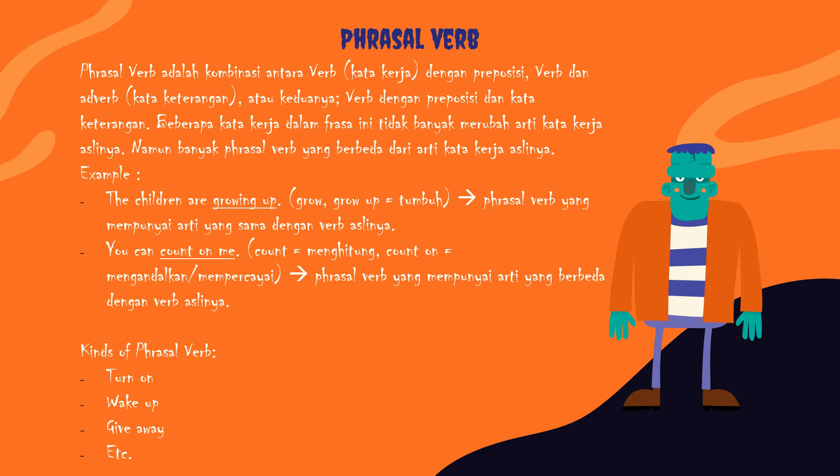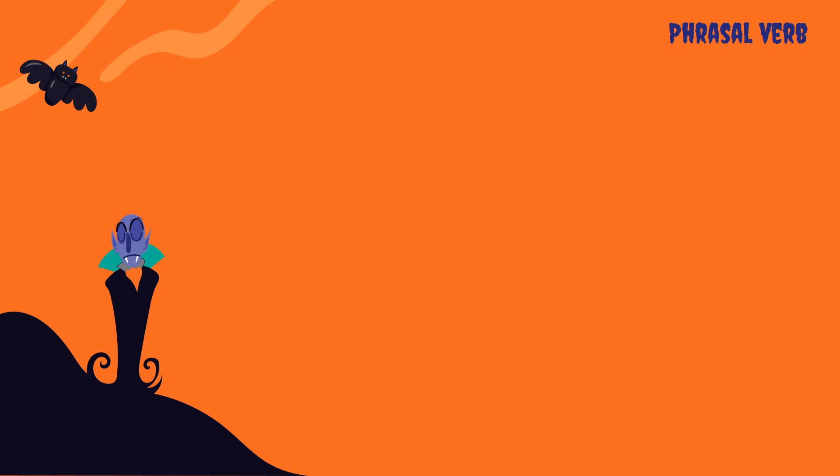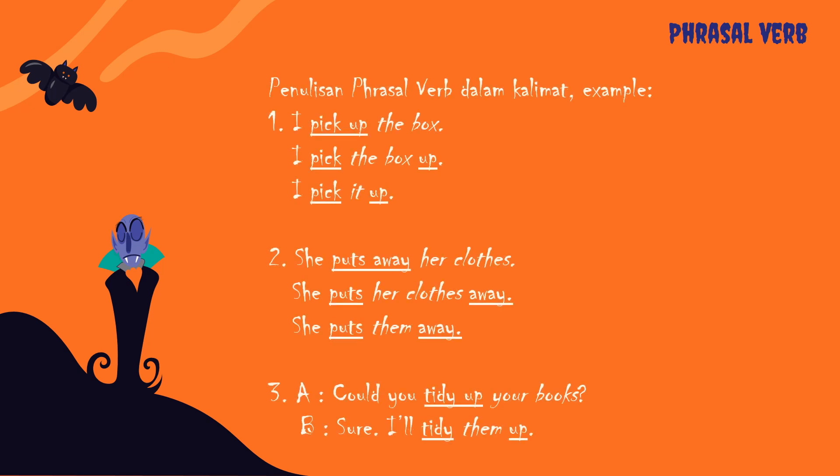Selanjutnya, jenis-jenis atau macam-macam dari phrasal verb — di situ ada turn on, wake up, give away, dan sebagainya. Now I will tell you how to write phrasal verbs in a sentence, atau bagaimana menuliskan phrasal verb dalam sebuah kalimat. Di sini juga akan dijelaskan mengenai penggunaan kata ganti 'it' dan 'them.' Lihat kalimat nomor satu: I pick up the box — objeknya adalah 'box,' dan pick up adalah phrasal verb-nya.